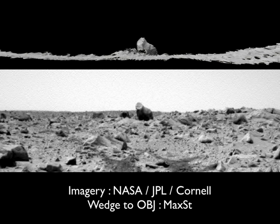Thanks to NASA, JPL, and Cornell for releasing all their pictures. Thanks to a guy called Max Street — I don't know his real name, but on a forum he posted a tool to convert these engineering data into animatable data. Two pictures, the terrain wedges from those stereo pictures producing a 3D model to explain the geometry of this thing and why it looks like what it does. Not an exact match — I haven't spent too long trying to line them up exactly — but this is pretty much a good match for those rocks.